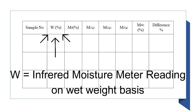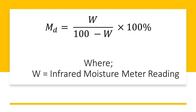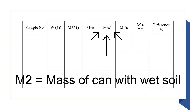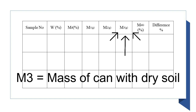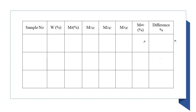This is the way to record data. W is the infrared moisture meter reading in wet weight basis. MD is the moisture in dry weight basis, which is derived from W. This percentage can be computed using this equation, where W is the infrared moisture meter reading. M1 is the mass of the empty moisture can. M2 is the mass of the moisture can with wet soil. M3 is the mass of the moisture can with dry soil. MDG is the moisture in dry weight basis by the gravimetric method. The difference percentage is the difference in moisture content determined by the gravimetric method versus the infrared moisture meter method.